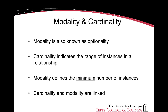In addition to depicting the relationship between entities, data modeling can be used to convey additional information and constraints about relationships through a data model. This is through the use of modality and cardinality. Modality, also known as optionality, refers to the minimum number of instances that exist in an entity relationship. Cardinality indicates the range of instances in an entity relationship and can go from zero to many. Both modality and cardinality are linked to each other.